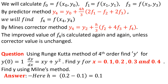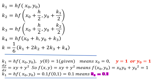Given: y(0) = 1, dy/dx = xy + y². So x0 = 0 and y0 = 1. The x values are 0.1, 0.2, 0.3, 0.4, making it clear that the step size h = 0.2 − 0.1 = 0.3 − 0.2 = 0.1. We will calculate k1, k2, k3, k4 using the RK4 method of order four.